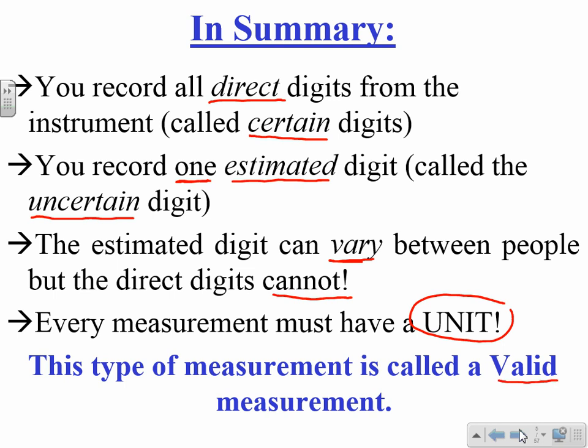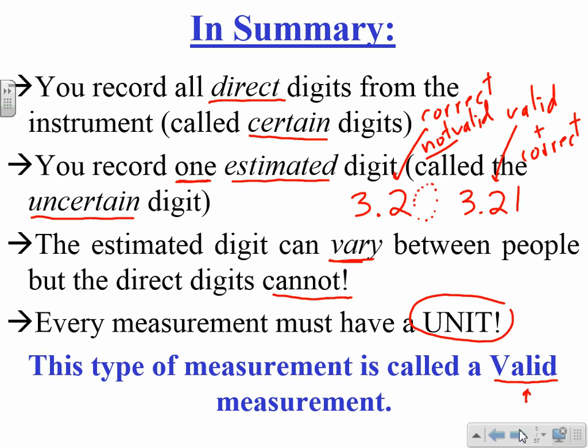And then the estimated digit can vary, again, between people. The direct digits cannot vary between people. And then don't forget that every measurement must have a unit. And this measurement is called a valid measurement. So a measurement could be valid and still be incorrect, because the valid means you used the right number of decimal places. And conversely, a measurement could be correct but invalid. For example, if the measurement was 3.2, then it's correct. But you should have said 3.21. So this measurement would be valid and correct. This measurement will be correct but not valid. It's not valid because it's missing that decimal place at the end.